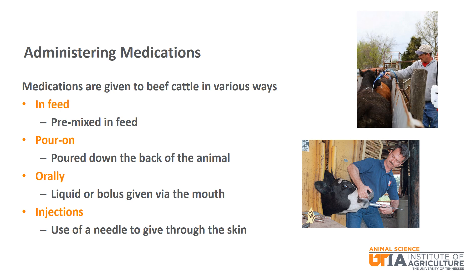Next, it is common for dewormers to be poured on. Another term for a dewormer is an anthelmintic. These products are typically poured down the back of the animal. There are examples for both internal and external parasites.